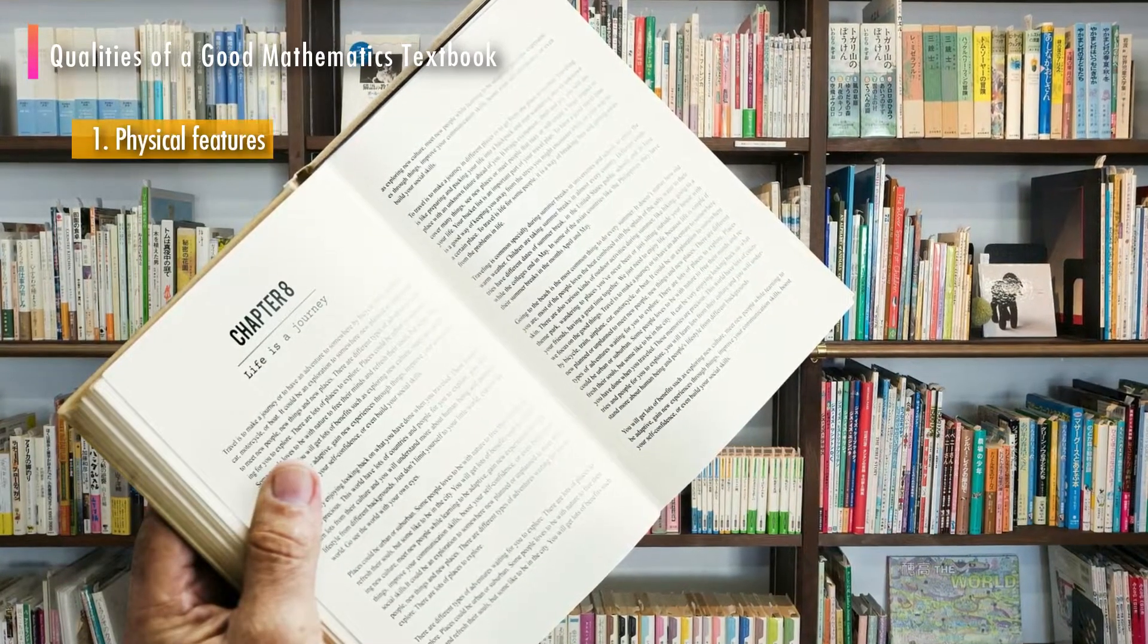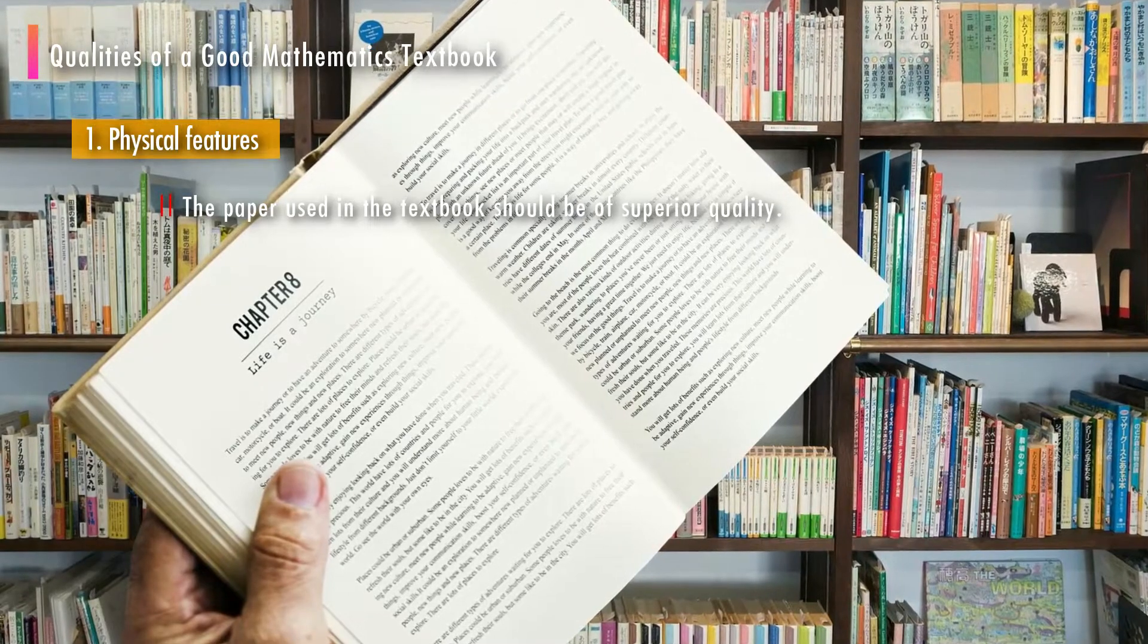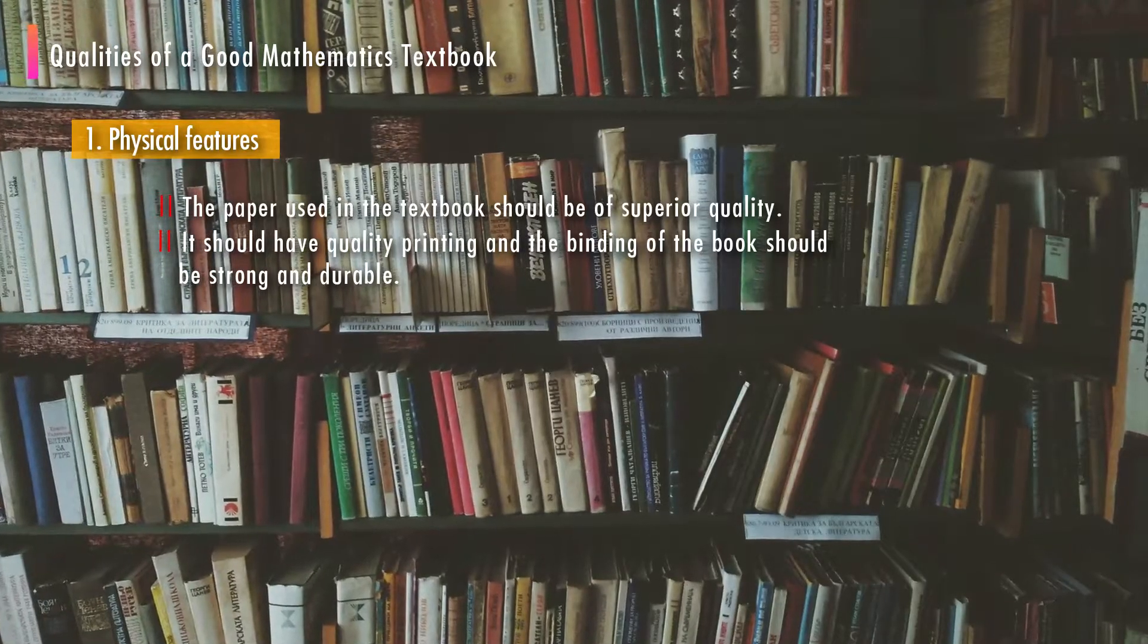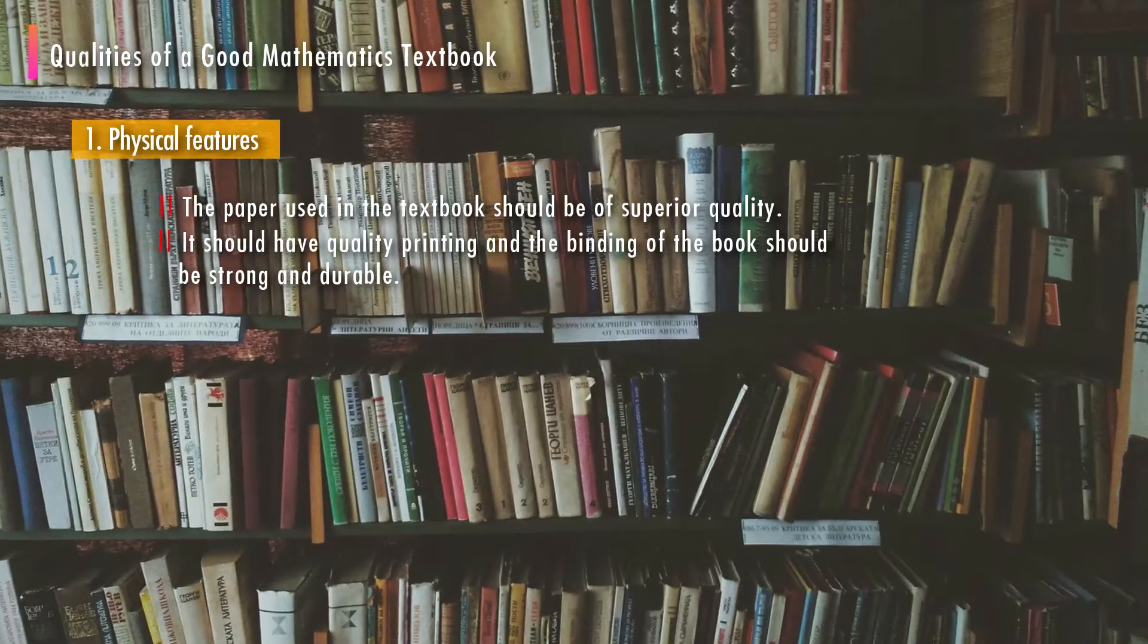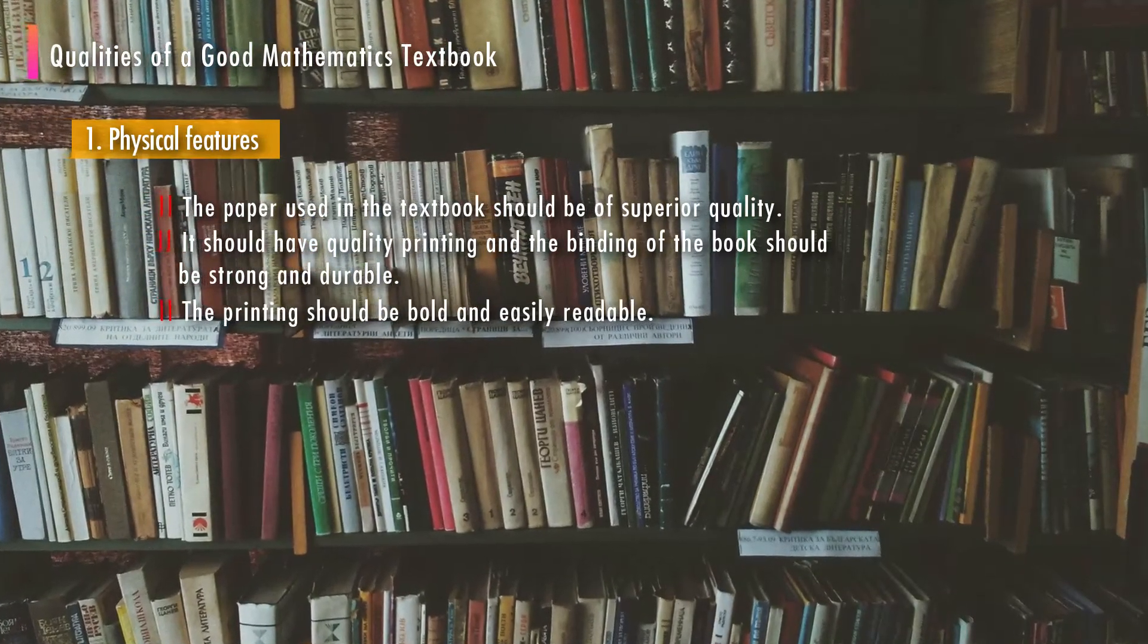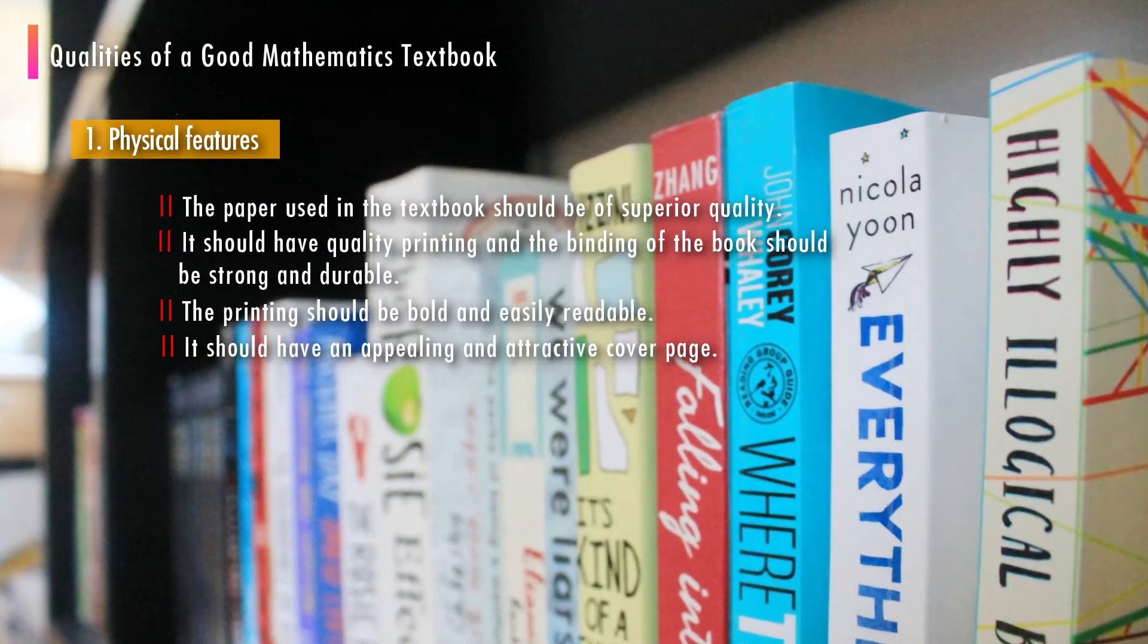First, physical features. The paper used in the textbook should be of superior quality. It should have quality printing and the binding of the book should be strong and durable. The printing should be bold and easily readable. It should have an appealing and attractive cover page.